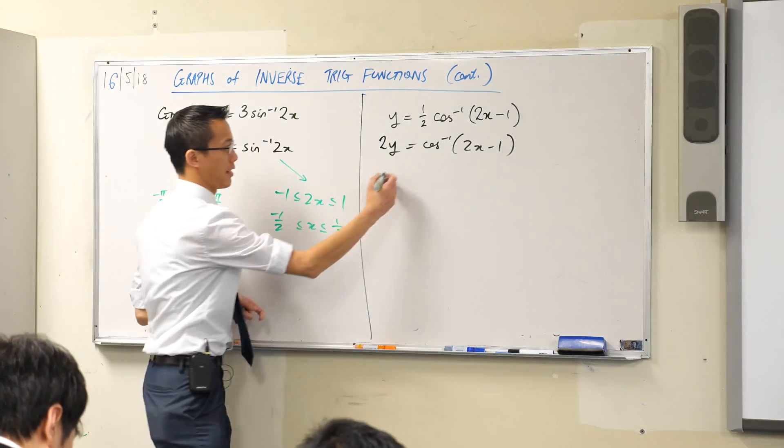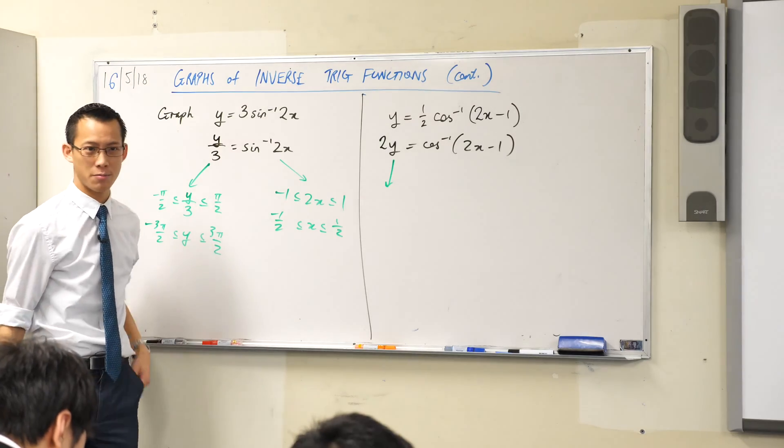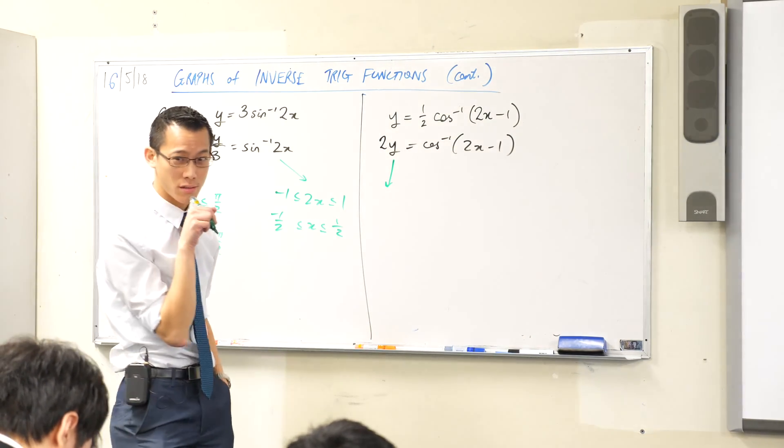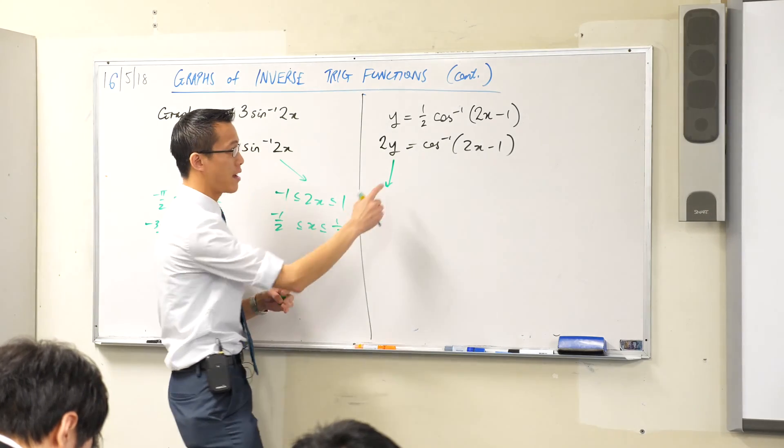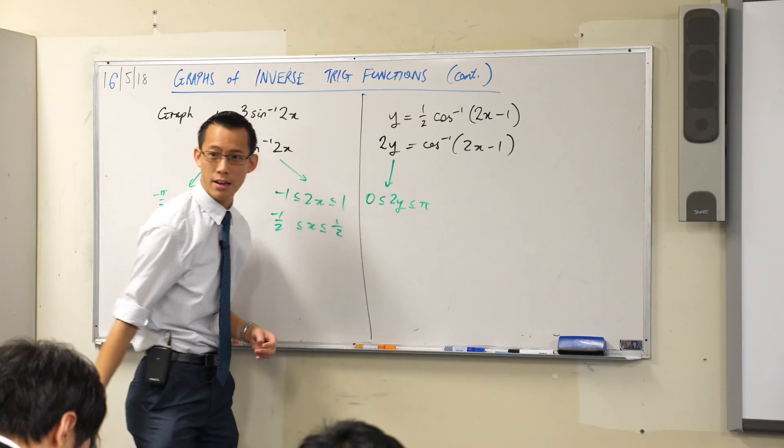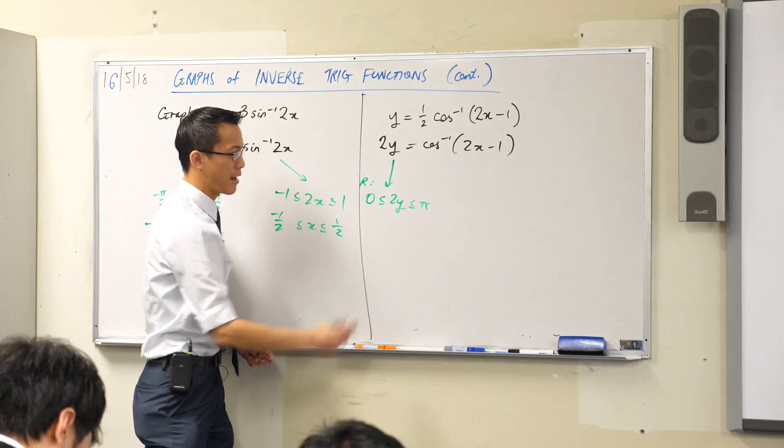Let's look at this part. Firstly, what's the normal range of cos inverse? We're not sine inverse anymore, we're looking at cos inverse. Do you remember what the range is? It goes from zero to pi. I don't have y in there though, I've got 2y in there. Is that okay? So now to get the real range out of this, sorry I should have written R for range.